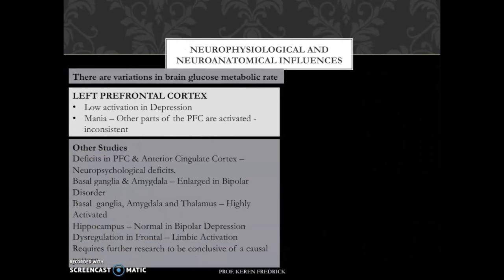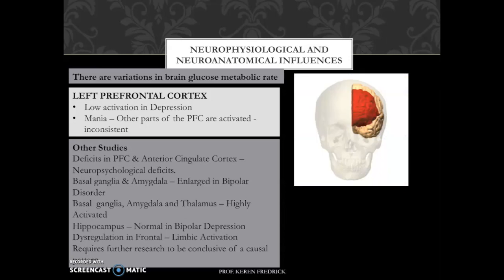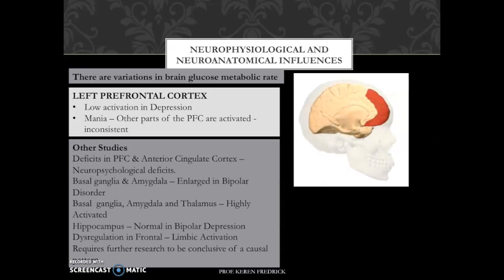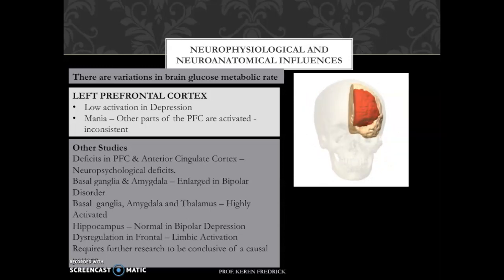With regards to neurophysiological and neuroanatomical differences, there are variations in brain glucose metabolic rate as evidenced through PET scans. However, scarce evidence for manic episodes has been recorded because it is really hard to put a person going through manic states under such scans. Many research findings indicate lower activation in the left prefrontal cortex with regards to depression, while mania involves other regions of the prefrontal cortex with higher activity, demonstrating shifting patterns of brain activity during depression, mania, and normal states.